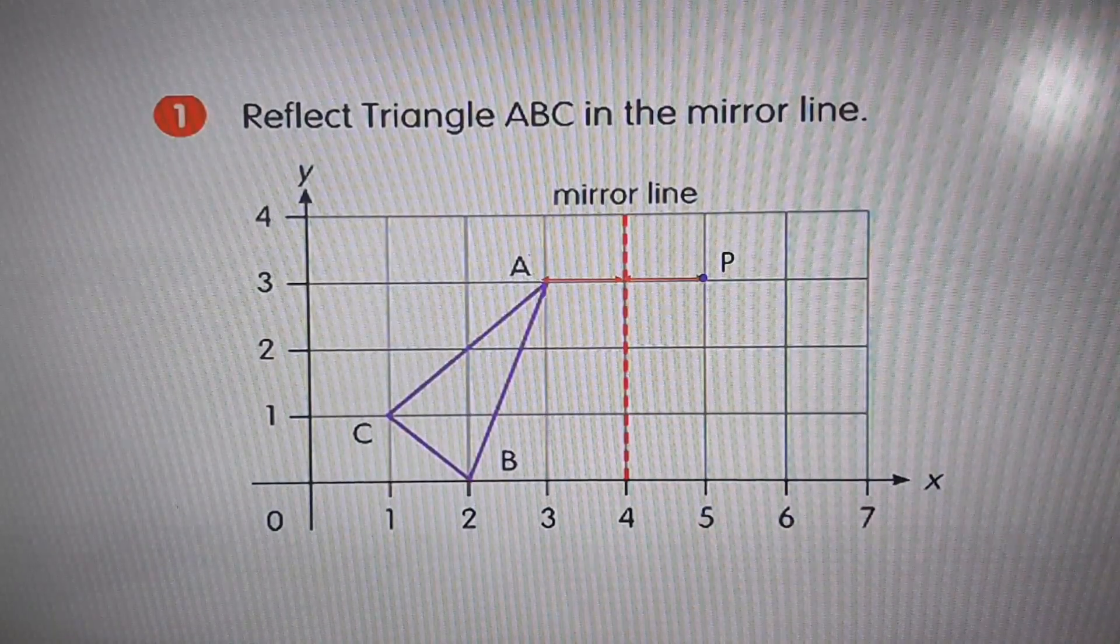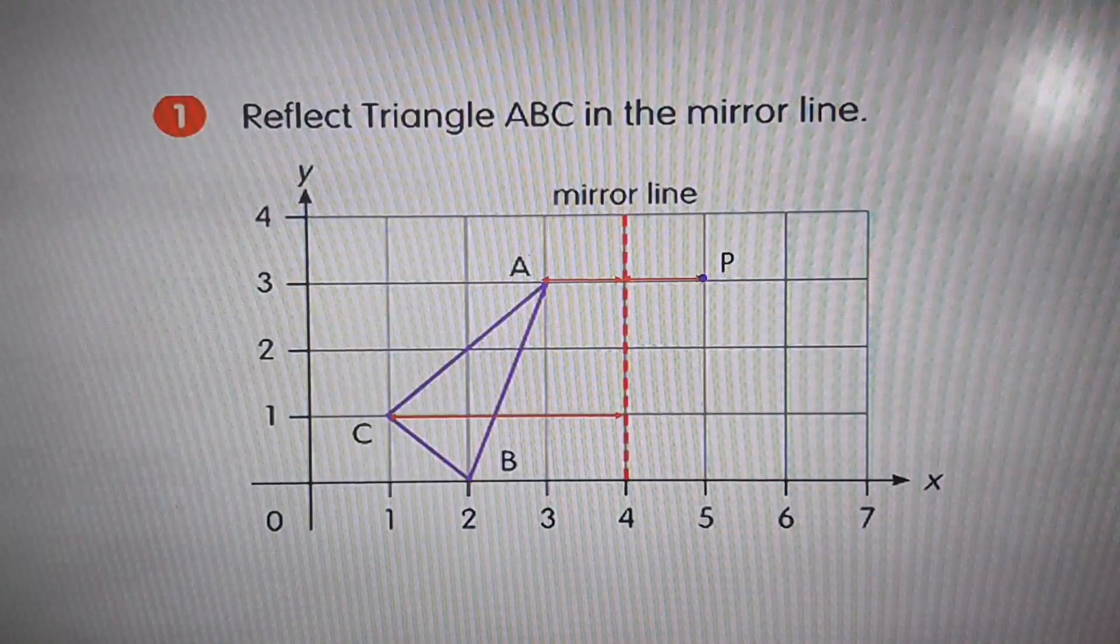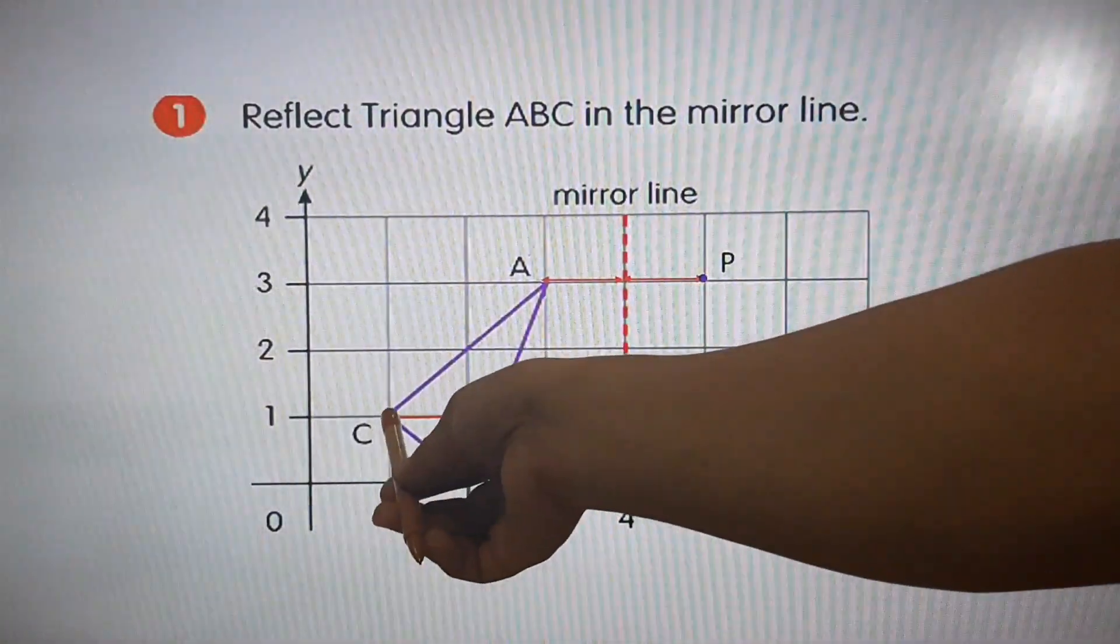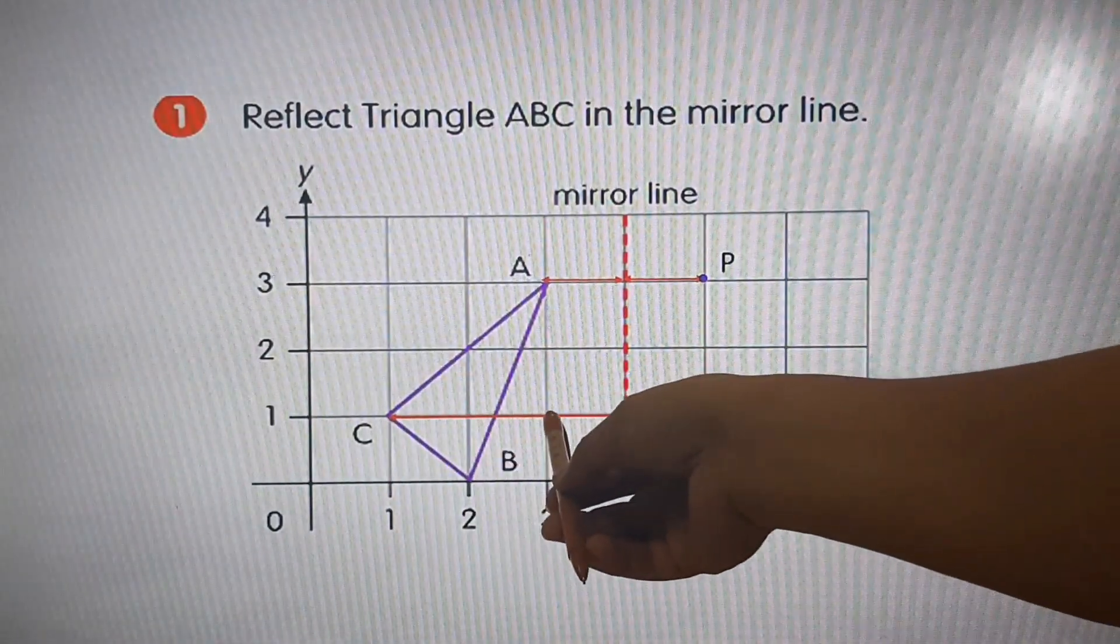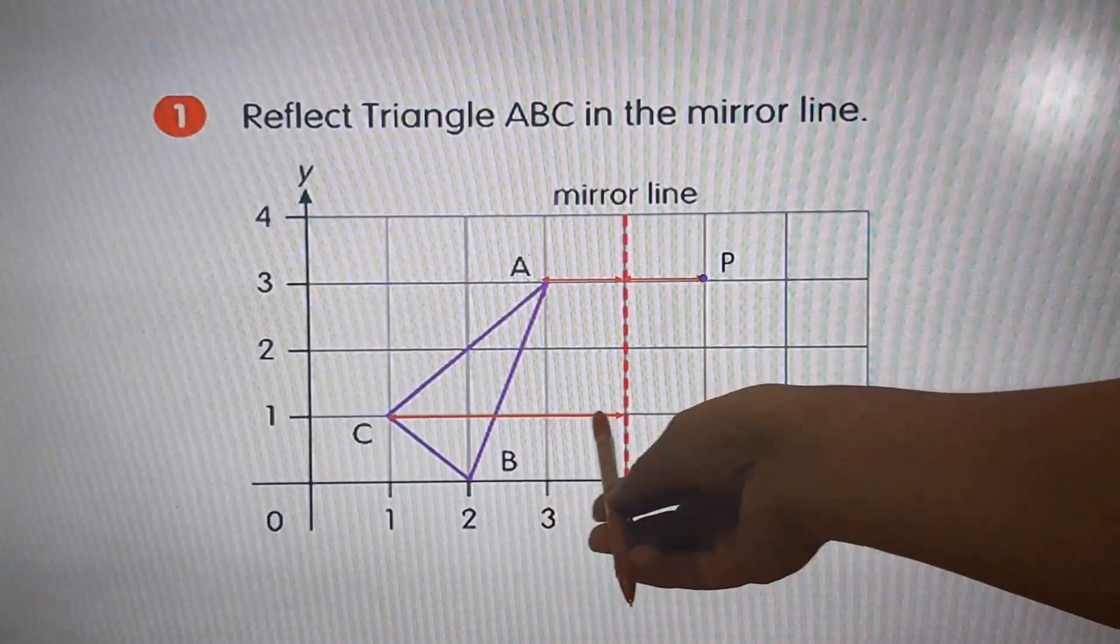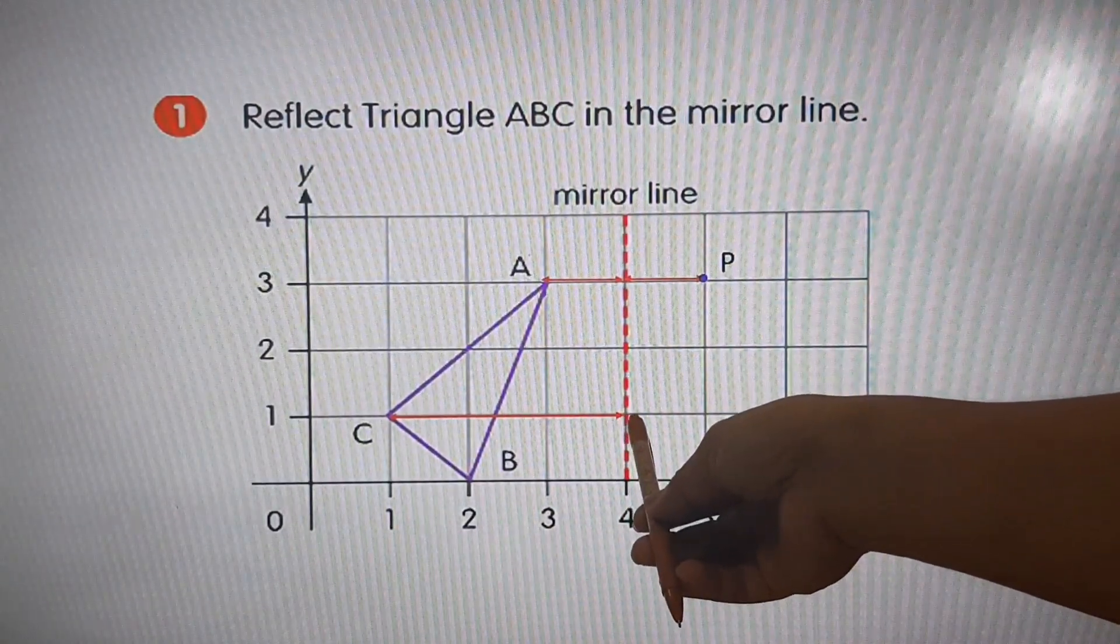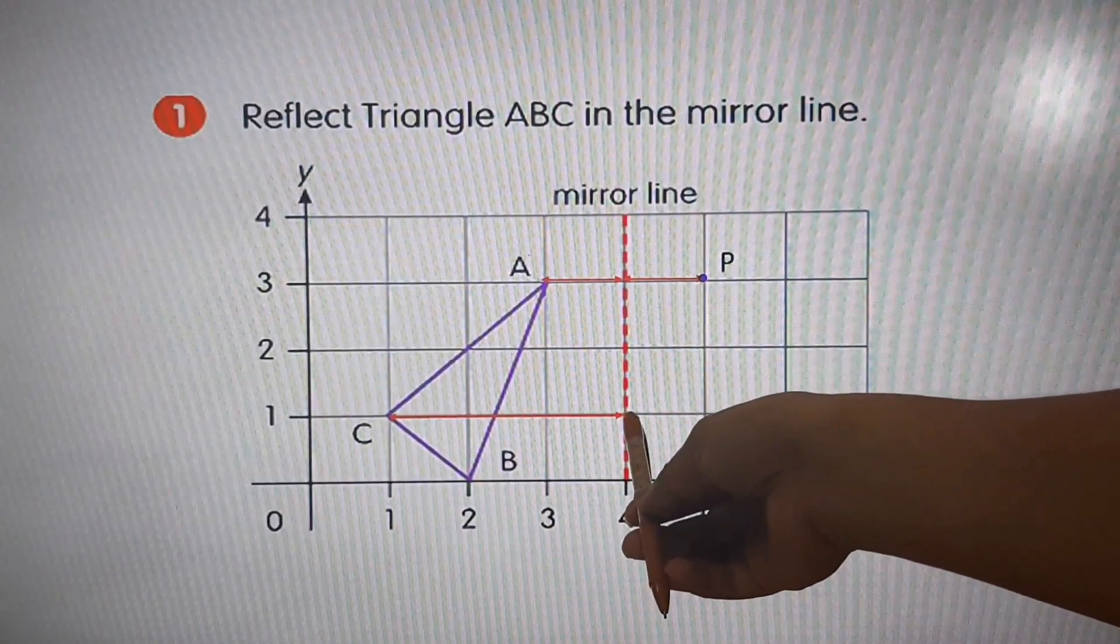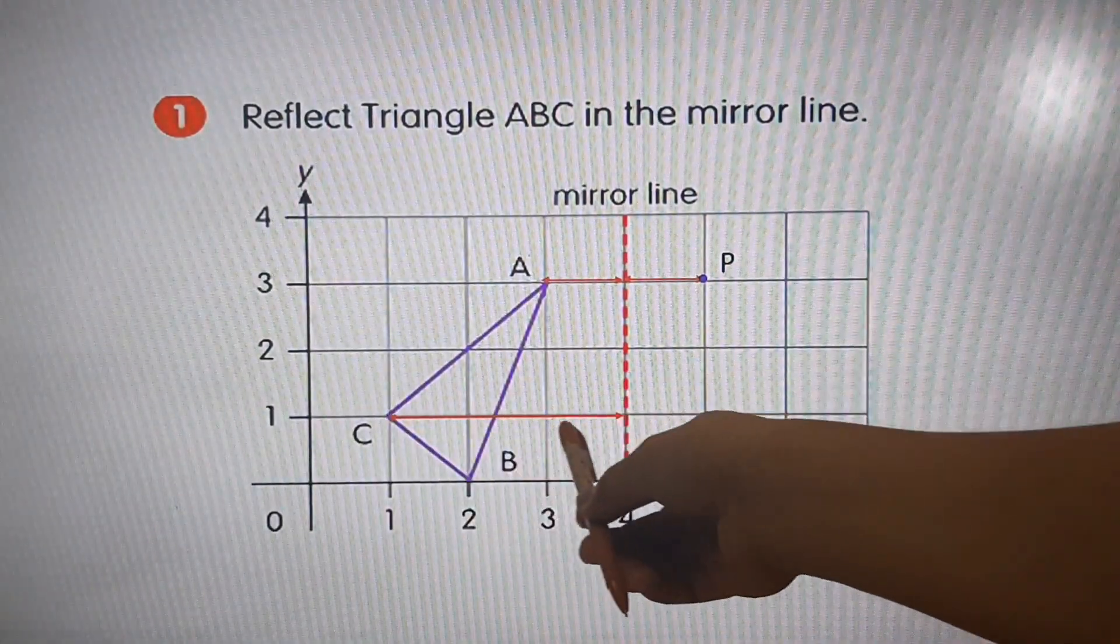Similarly, there are three squares from point C to the mirror line. Let's count. One, two, and three. Count the same number of squares on the opposite side of the mirror line.